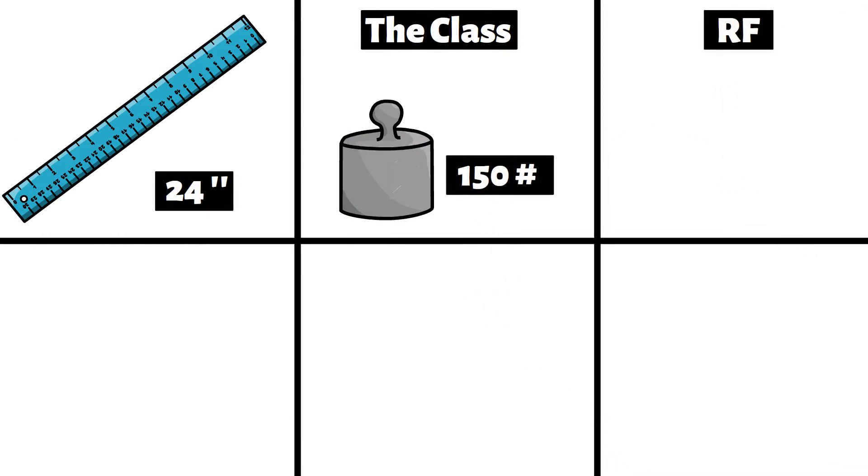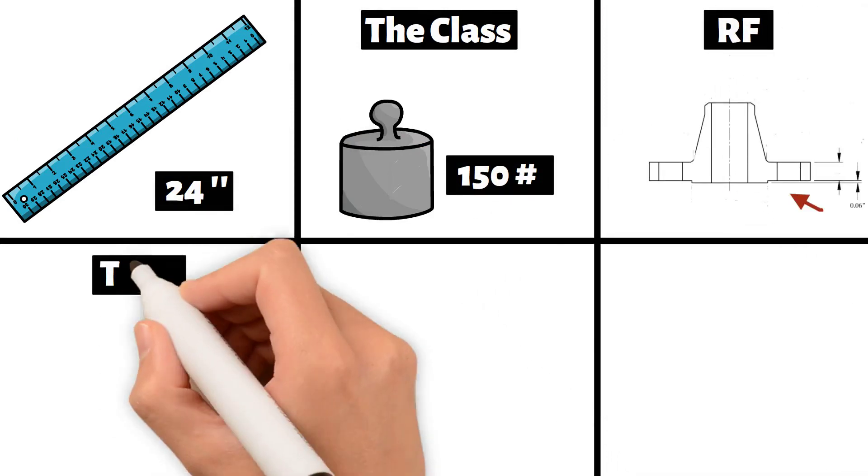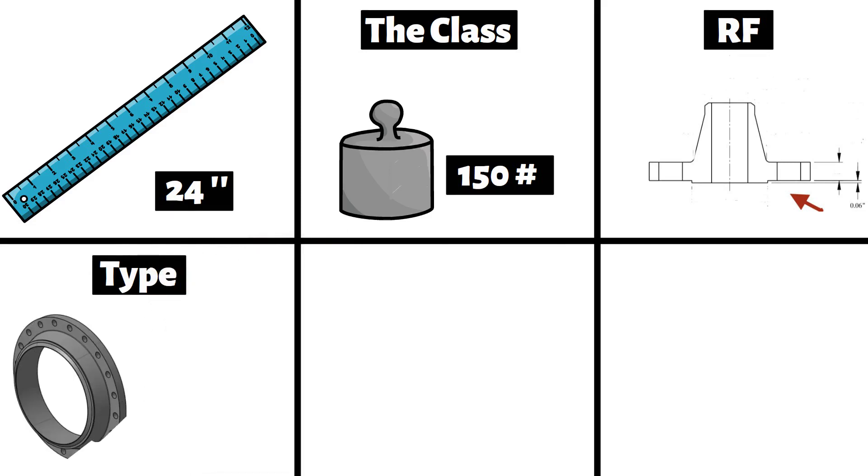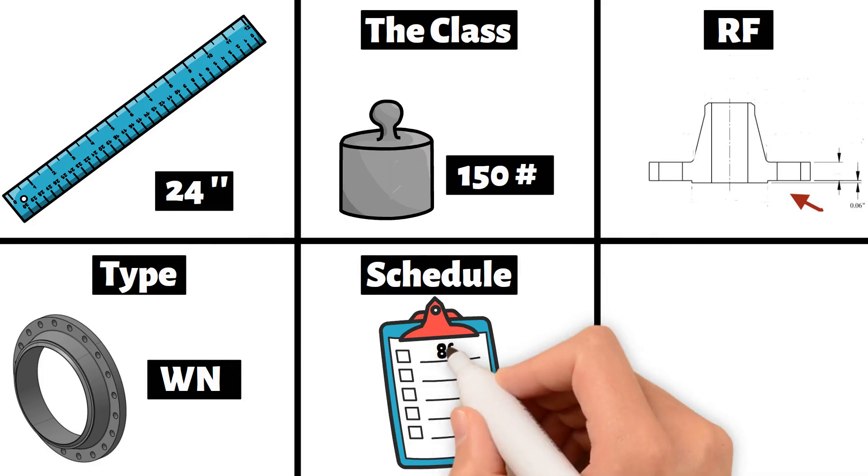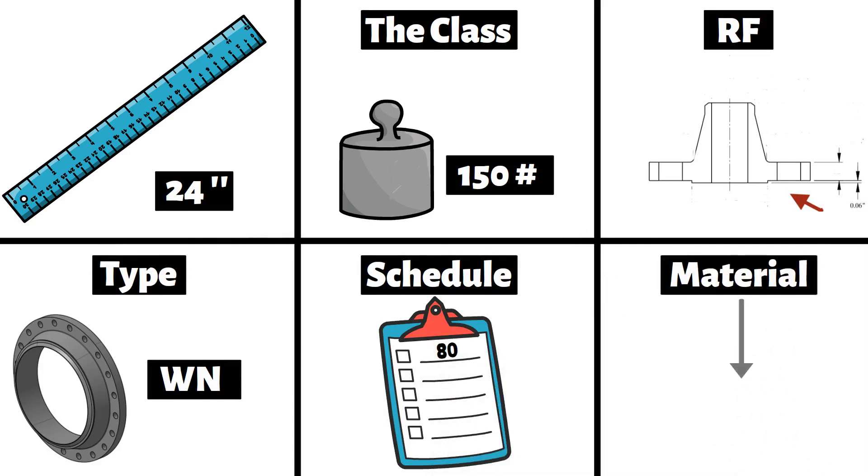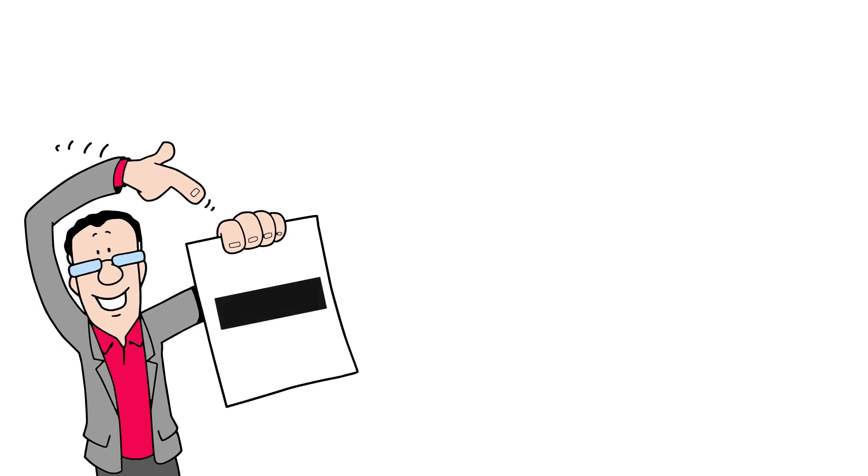Next, the face. Let's say raised face. Then type. For this example, we will use weld neck. Now schedule. We can say schedule 80. And material, let's say A105. In some cases, you may need to mention the specification.